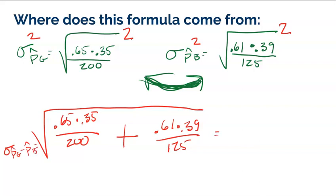This is easy to type into your calculator all at once. Start with the square root, then enter: 0.65 × 0.35 / 200 + 0.61 × 0.39 / 125. You get approximately 0.0551, so the standard deviation of the difference is about 5.5%. This formula comes directly from the rules of combining standard deviations that we've covered previously.